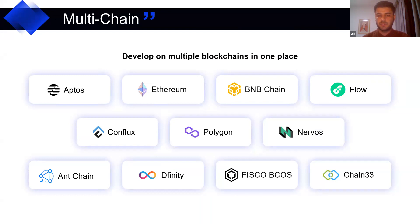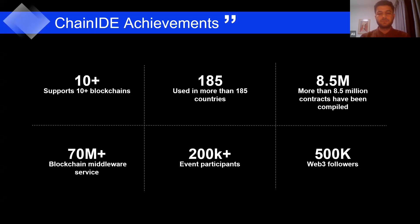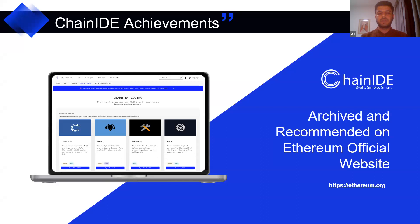Currently we support more than 10 public blockchains, including Aptos, Ethereum, BNB Chain, Flow, Conflux, Polygon, Ant-Chain, Dfinity, Fisco, Bicos, and Chain33 — some are consortium blockchains and some are public. We are used in more than 185 countries, and more than 8.5 million contracts have been deployed using Chain IDE. We have held hackathons, webinars, seminars, and bootcamps with more than 200,000 participants from countries including Africa, Turkey, Dubai, Pakistan, and America. Recently, Chain IDE has been recommended by the official Ethereum documentation.